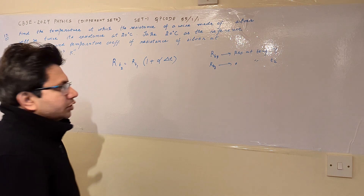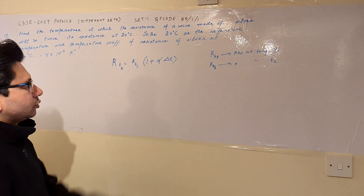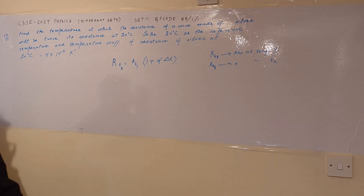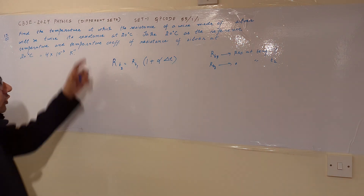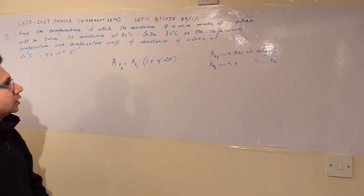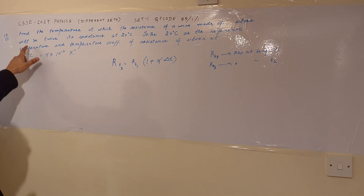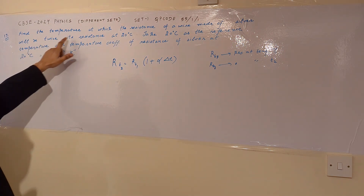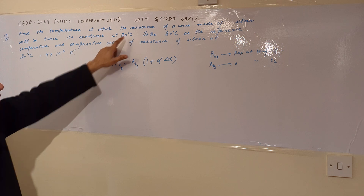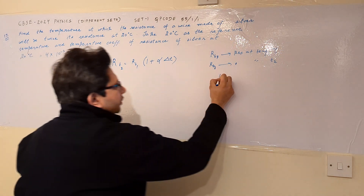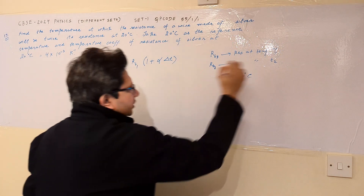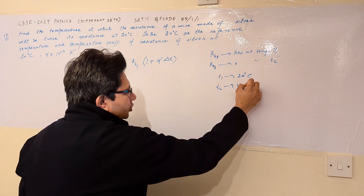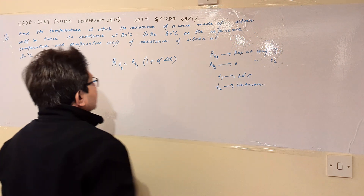Alpha is known as the positive temperature coefficient of resistance. It is given in this problem as 4 into 10 to the power minus 3. In this problem, it is said that the resistance will be twice its value at 20 degrees Celsius, so we take T1 as 20 degrees Celsius and T2 as the unknown temperature.